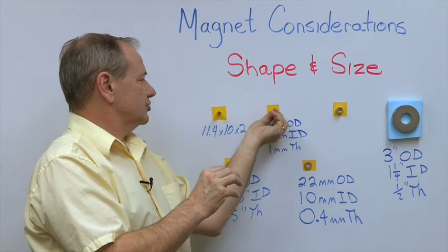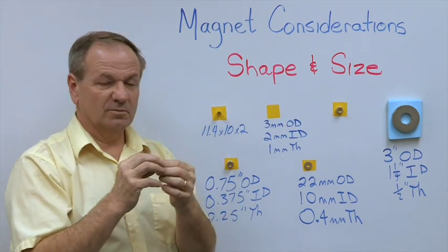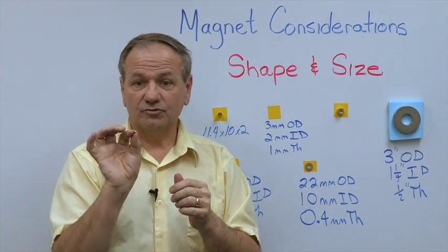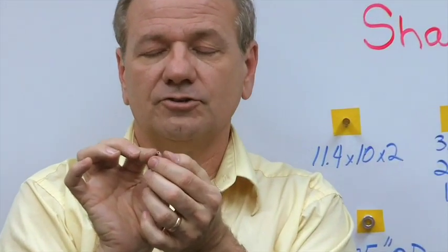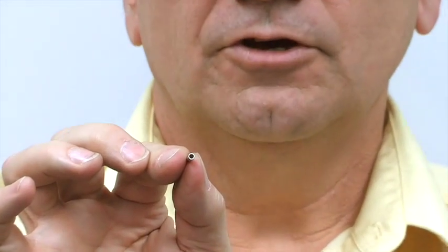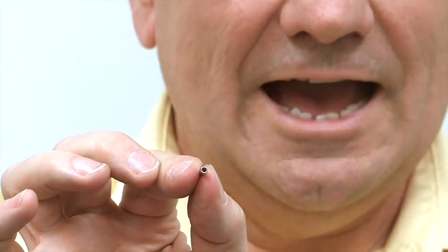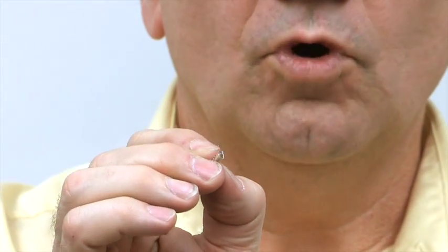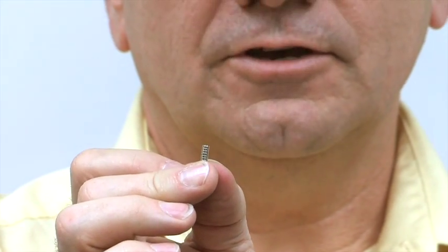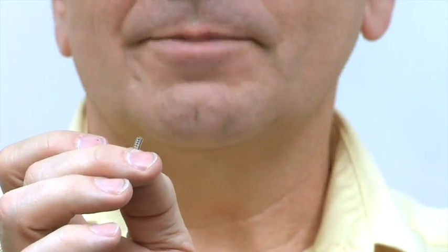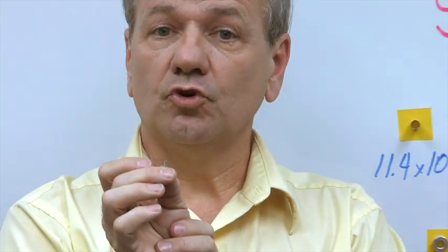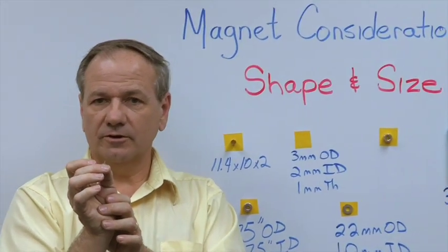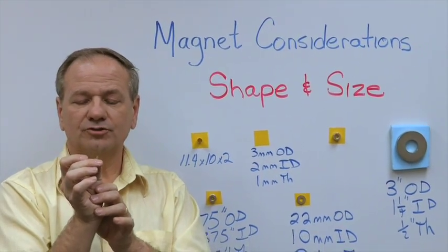Now we get down just to show how super small we can make them. We actually have some that are smaller than this. This particular magnet has a 3 millimeters OD, 2 millimeters ID, and it is 1 millimeter thick. This magnet has lots of little applications. Many of them are in the jewelry area or in the sensor area because of its extreme small size.